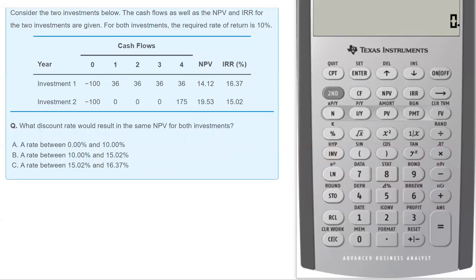So this is the question. It says, consider two investments below. The cash flows as well as the NPV and IRR for the two investments are given. For both investments, the required rate of return is 10%. Then the question says, what discount rate would result in the same NPV for both investments?